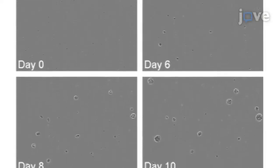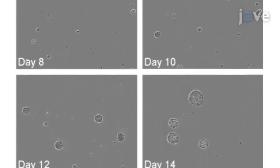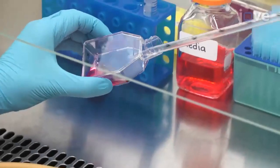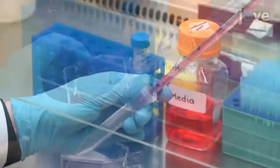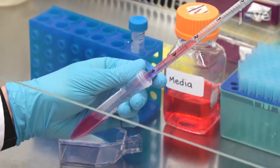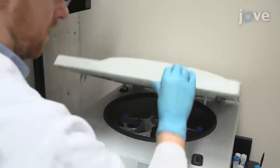When the neurospheres reach an approximately 250 micrometer diameter, use a pipette to flush media across the bottom of the flask to detach any adherent cells and transfer the supernatant to a 15 mL conical tube for centrifugation.